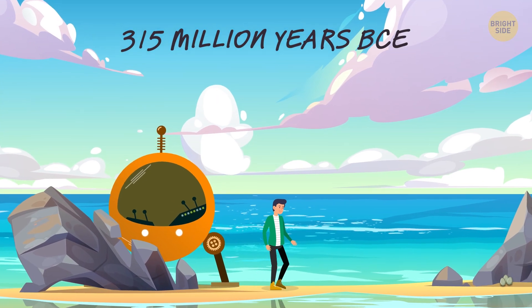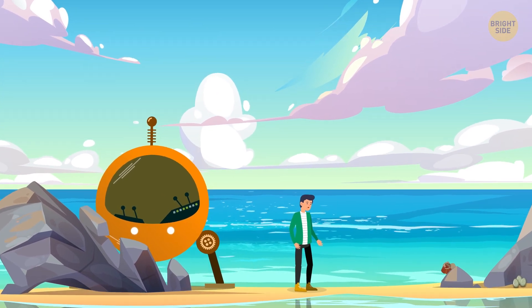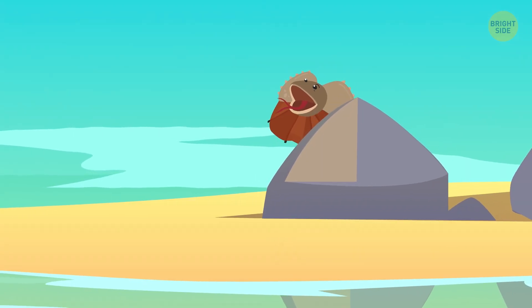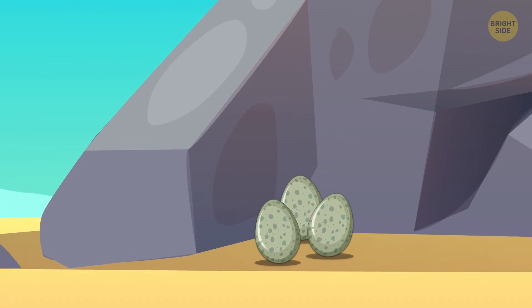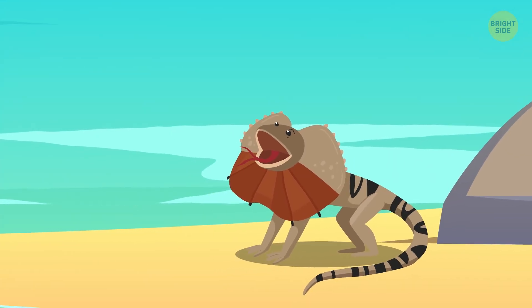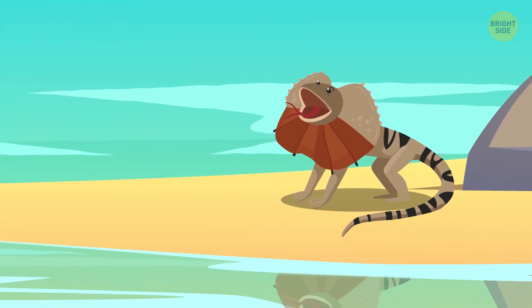About 315 million years BCE, Sam notices one of the first reptiles. Their skins have developed hard shells and don't have to be kept in water. Plus, reptiles' skin doesn't need to stay wet all the time. That's why the animals can finally move away from lakes and rivers.